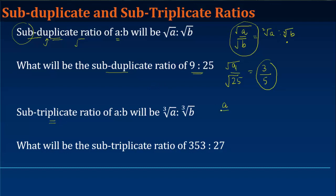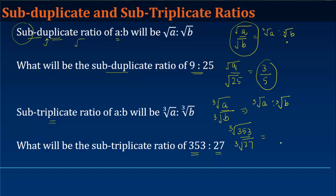For the sub-triplicate ratio of any a:b, we take the cube root of the numerator and the cube root of the denominator, giving ∛a:∛b. For example, the sub-triplicate ratio of 343:27 — we know 27 = 3³ and 343 = 7³, so the answer is 7:3.